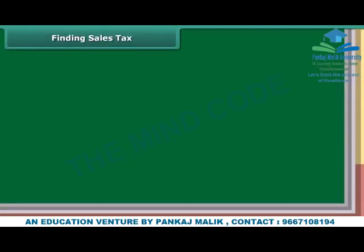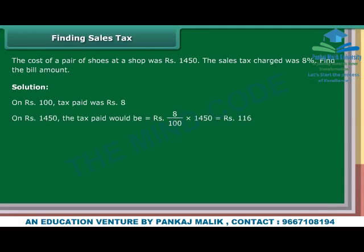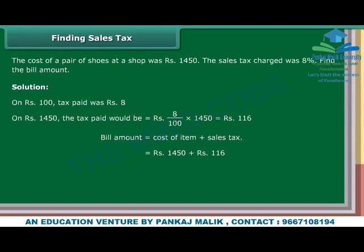Finding sales tax. The cost of a pair of shoes at a shop was Rs. 1,450. The sales tax charged was 8%. Find the bill amount. Solution: On Rs. 100, tax paid was Rs. 8. On Rs. 1,450, the tax paid would be Rs. 8 upon 100 into 1,450, which equals Rs. 116. Bill amount equals cost of item plus sales tax, which equals Rs. 1,450 plus Rs. 116, which equals Rs. 1,566.